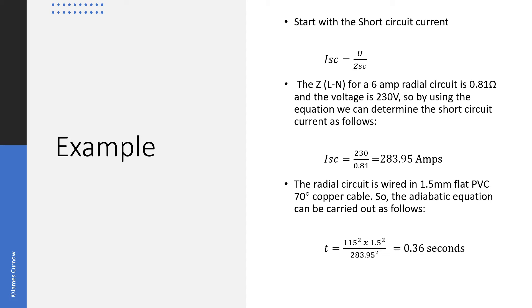If we assume that the radial circuit is wired in 1.5 mm flat PVC 70 degree copper, the adiabatic equation can be carried out as follows: T equals 115 squared, where 115 is the K value for 70 degree copper, multiplied by 1.5 squared divided by 283.95 squared, which gives us 0.36 seconds.